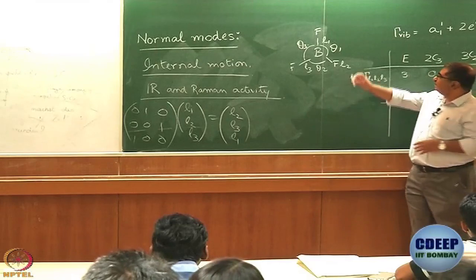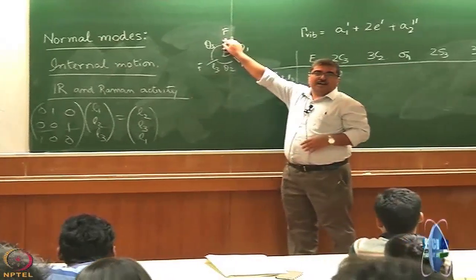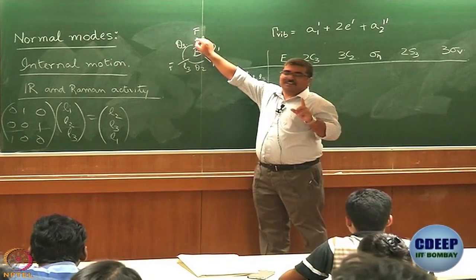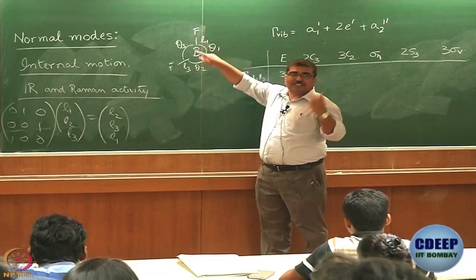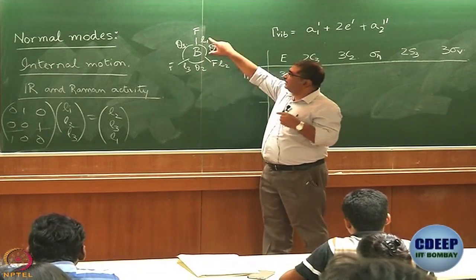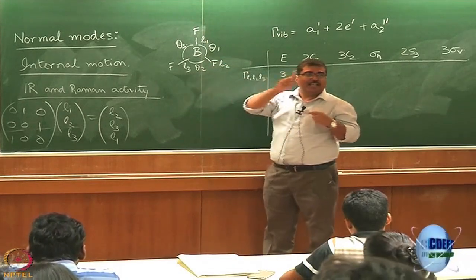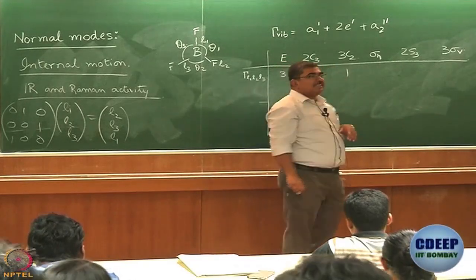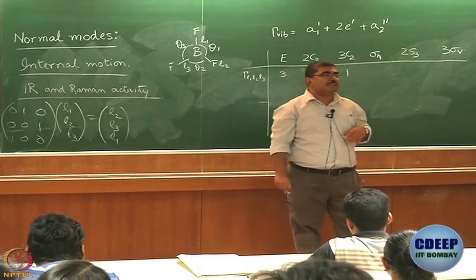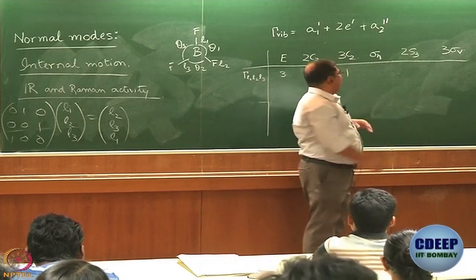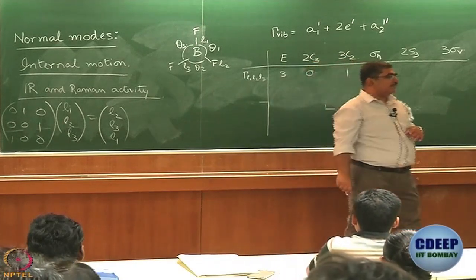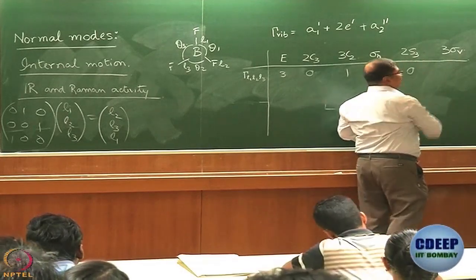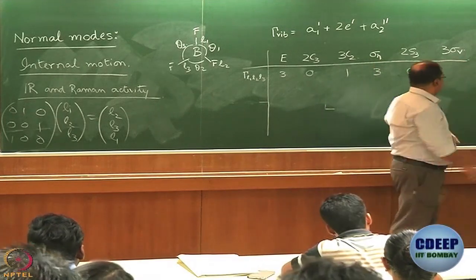What about C2? Let us say I apply C2, this C2. How many coordinates do not move from their position? 1. Now this is one coordinate. You are saying 2 because you are thinking of atoms. Don't forget each bond: L1, L2, and L3 are going to interchange. L1 remains in its own place. So what will be the character? 1. What about sigma H? 3. Nothing moves. S3? 0 because again they move from their places. What about sigma V? 1. Excellent.